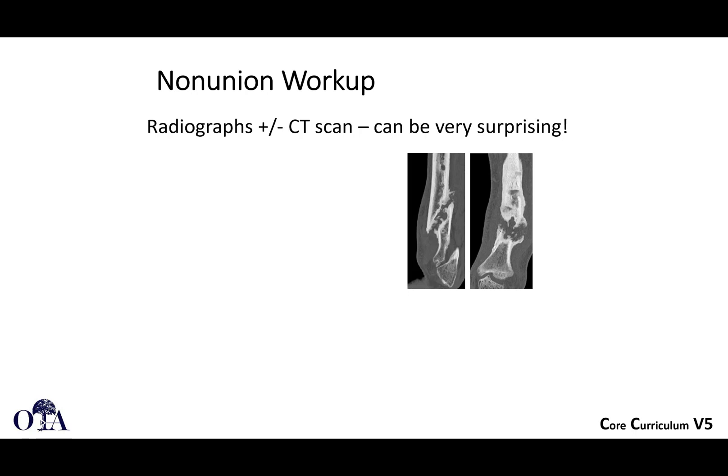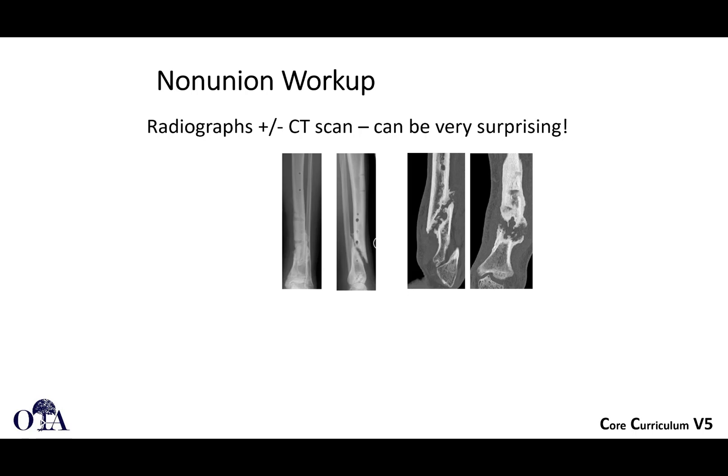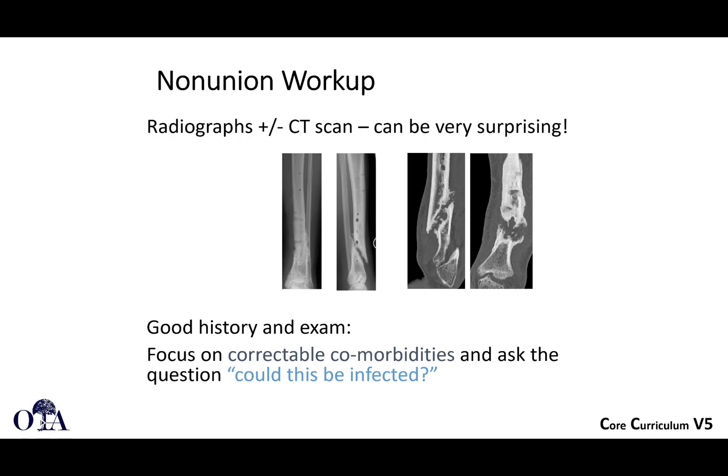You should consider getting radiographs, and if you're thinking non-union, also consider CT scan imaging — these can sometimes be surprising. Occasionally when you think something's healing and you get a CT scan, you find there's no bridging bone; implants and radiographic projections can make it hard to fully assess healing. Good history and exam can help — ongoing pain, lack of progression with physical function — and you should focus on correctable comorbidities like smoking, and ask whether this could be infected, which can be a hard diagnosis in the absence of frank drainage.